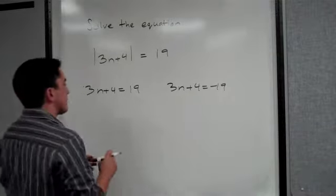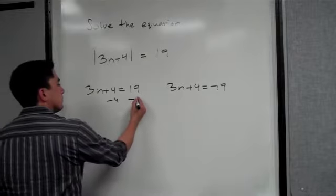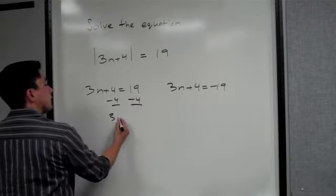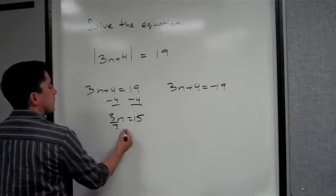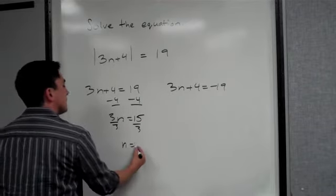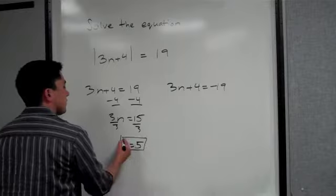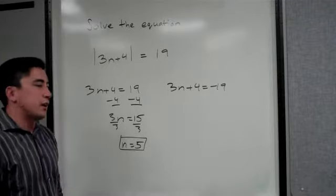So now we need to solve for n, so we have to subtract 4. We have 3n is equal to 15. Divide by 3, n is equal to 5. That wasn't so bad. There you go. n is equal to 5.